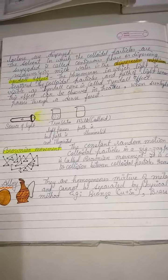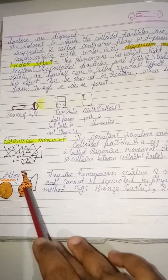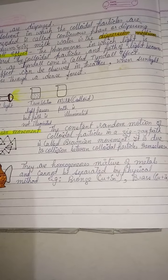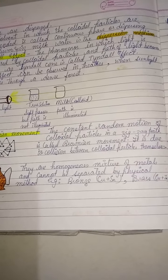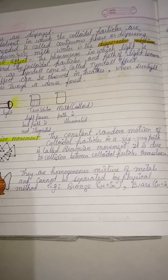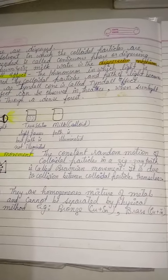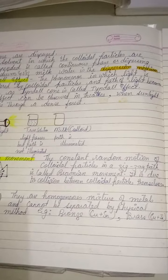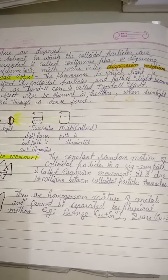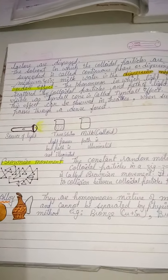Alloys are homogeneous mixtures of metals that cannot be separated by any physical method. Examples are bronze and brass. There are many alloys we use in our daily lives — please make a list of alloys for your general knowledge. This concludes our study of homogeneous and heterogeneous mixtures.